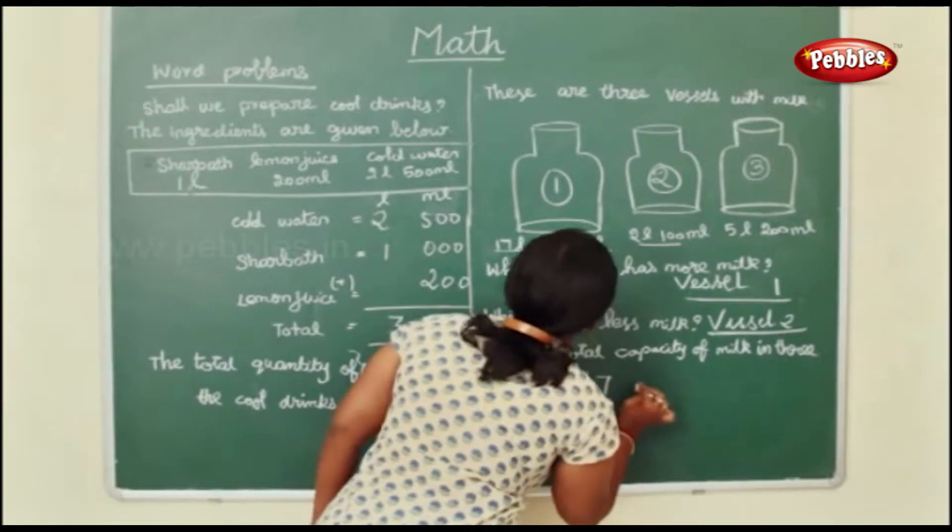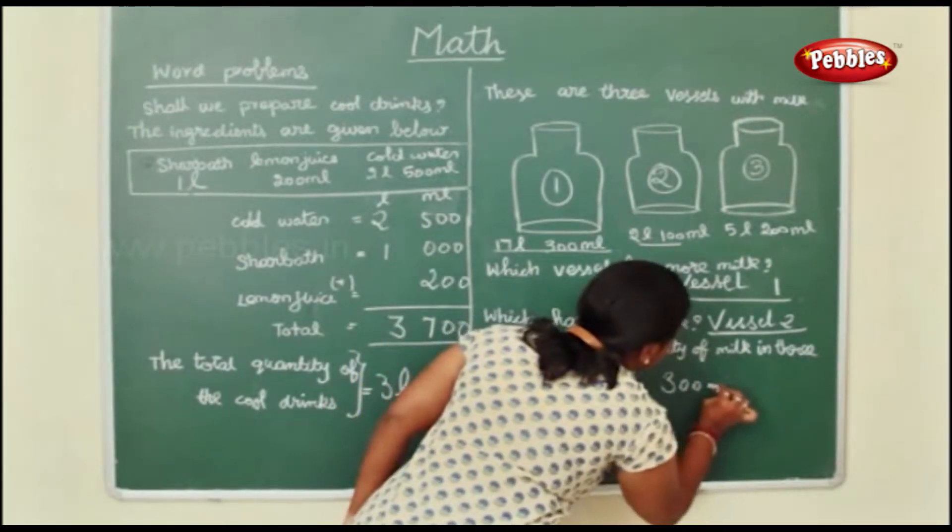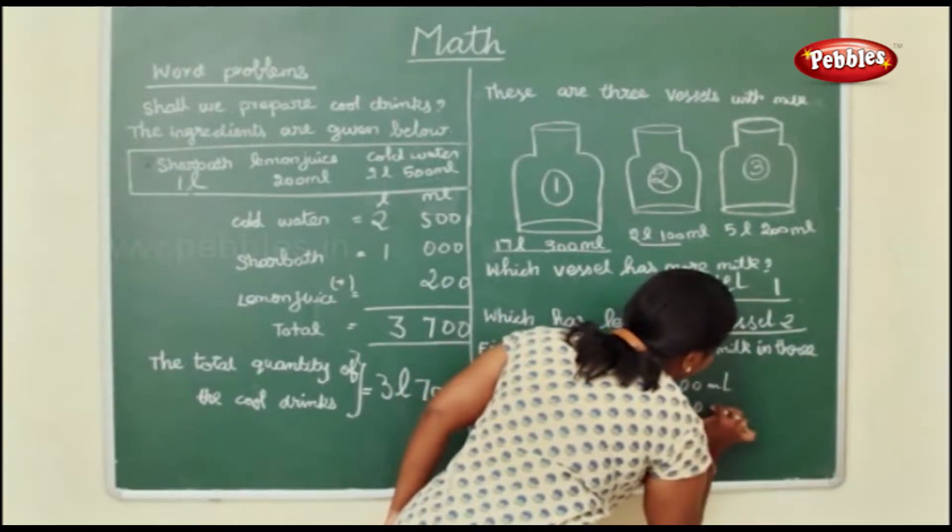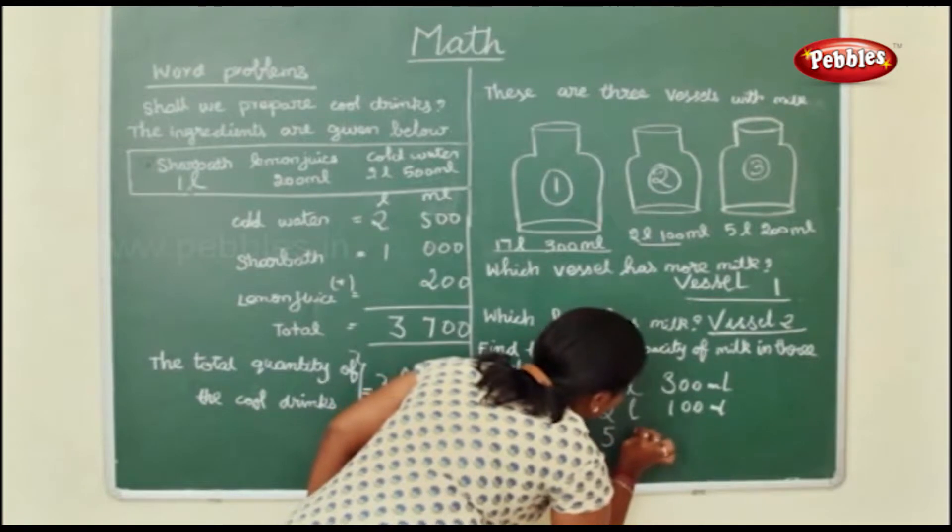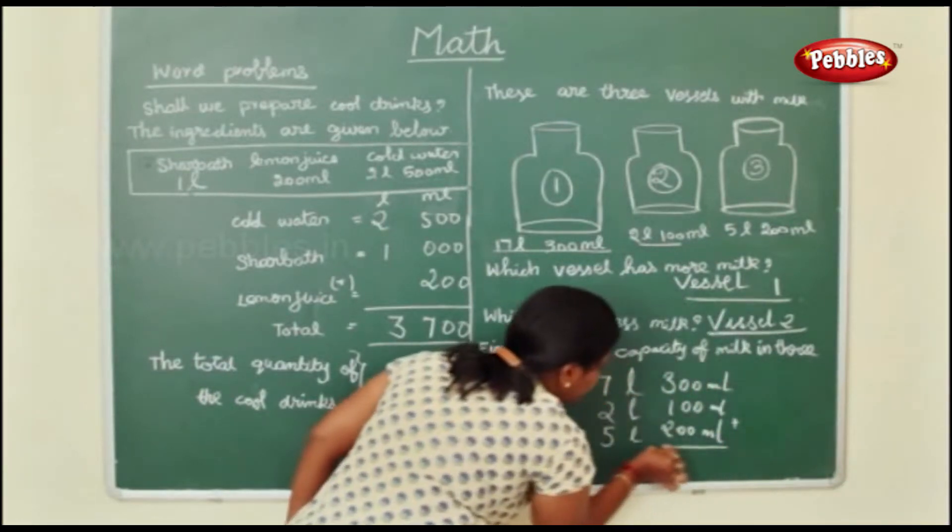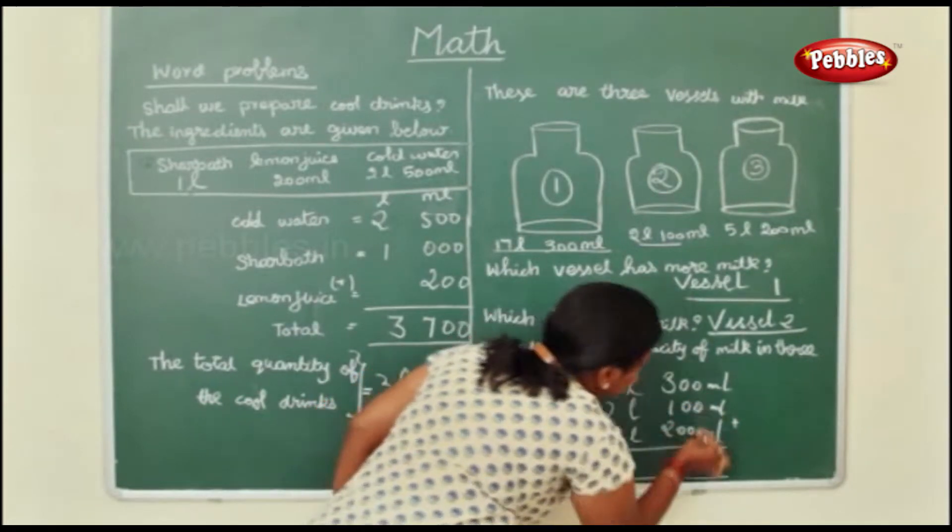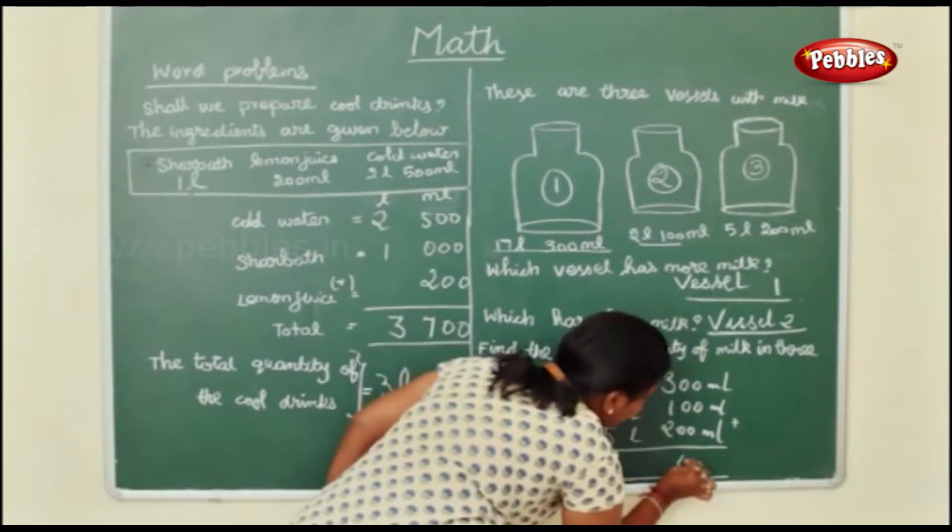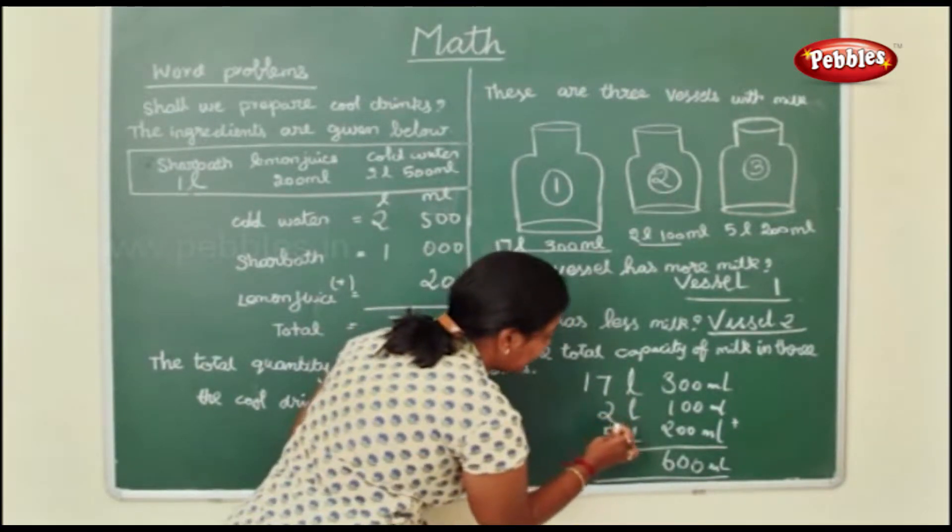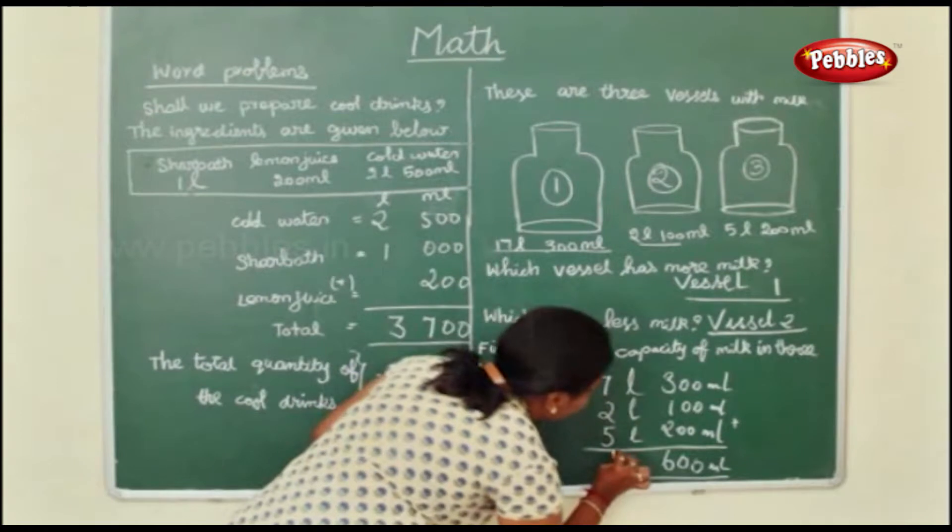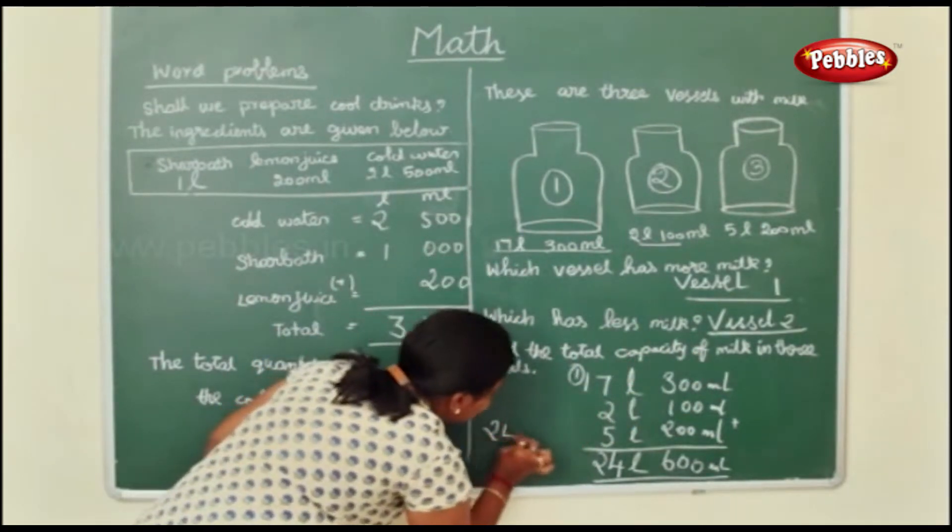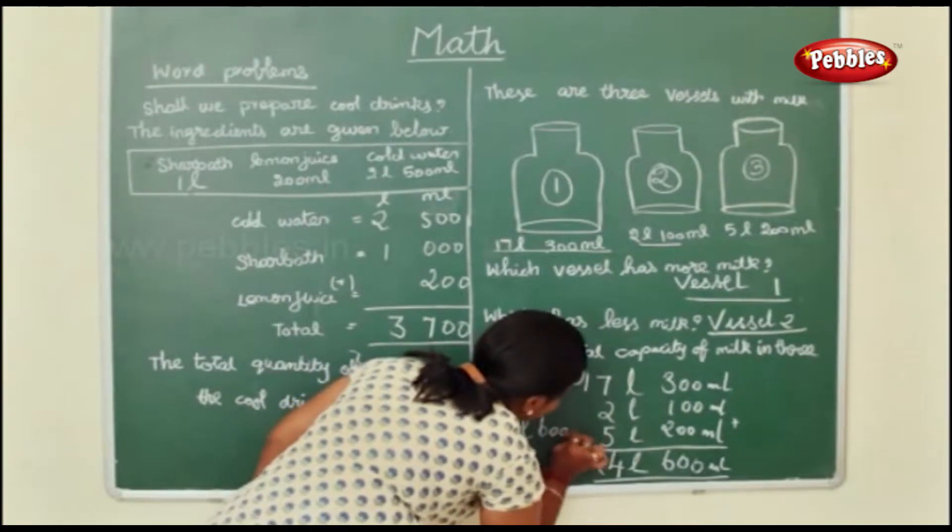Now find the total capacity of the milk. First in vessel 1 you have 17 liters, 300 milliliters. In vessel 2 you have 2 liters, 100 milliliters. Now I am going to add this up to find the total quantity or capacity. 3 plus 1 is 4, 4 plus 2 is 6. 7 plus 2 is 9, 9 plus 5 is 14. 1 plus 1 is 2. So the total capacity of the milk together is 24 liters and 600 milliliters.